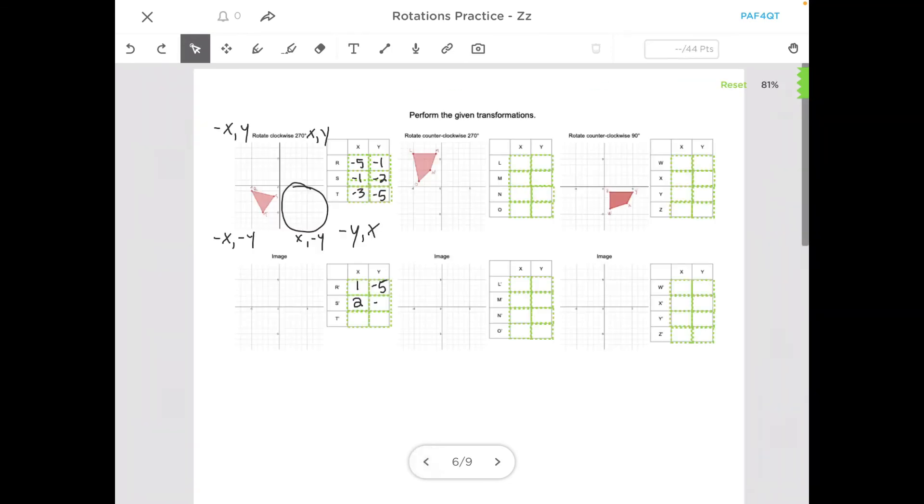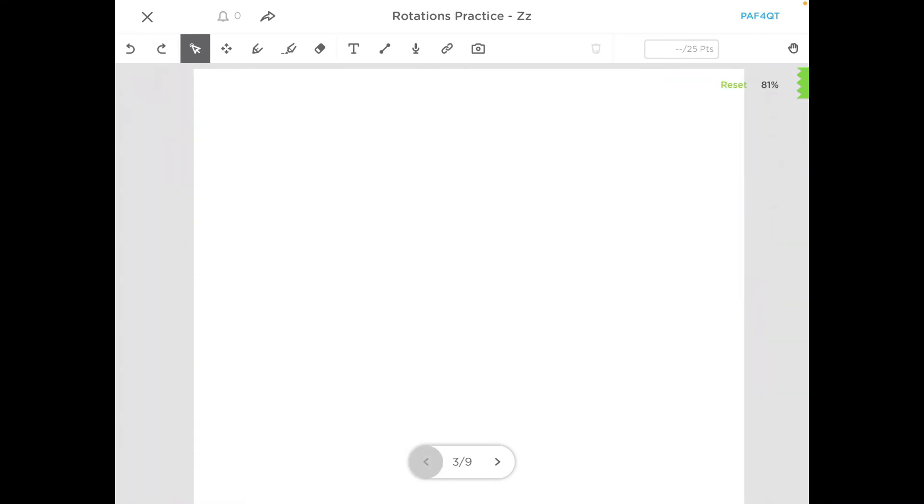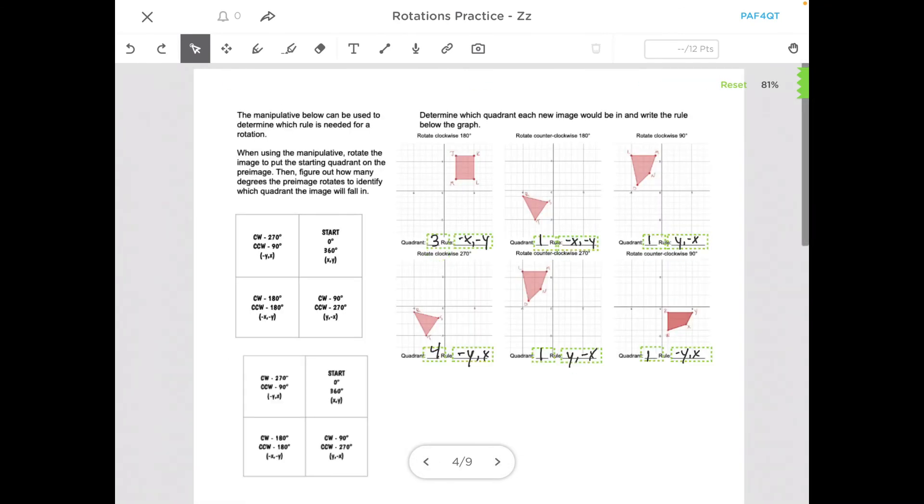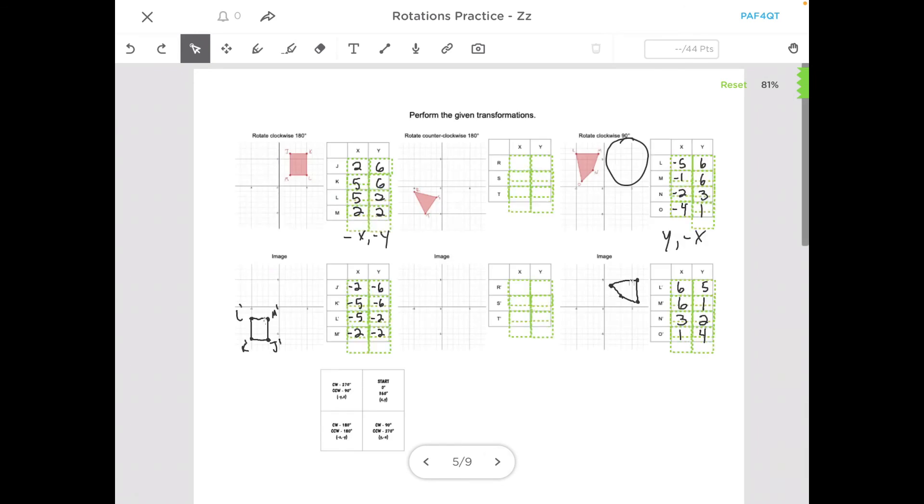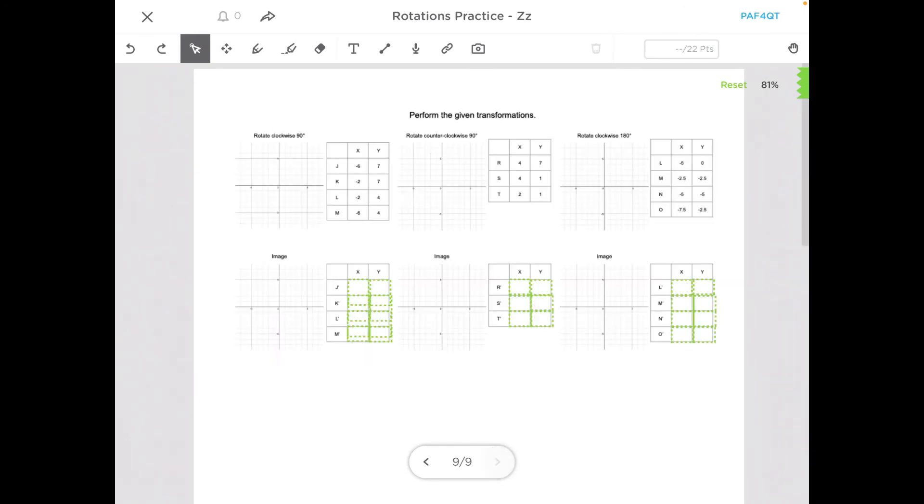So you can continue to look back at our page here to use our manipulative there and figure out those rules. And once you do that, you can complete these three problems. Again, it'll tell you if you got it right or if you got it wrong. If you are still struggling with it, make sure you send a message to your teacher through Canvas and we will get back to you to help you out with that. Have a great day, guys.